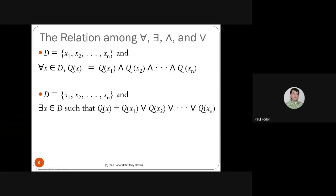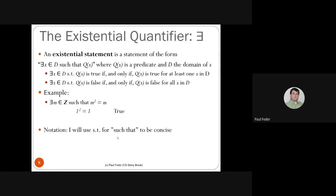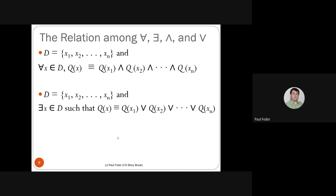Similarly, the existential quantifier over a finite domain is equivalent to a disjunction: there exists X in D such that Q(X) is equivalent to Q(x₁) ∨ Q(x₂) ∨ ... ∨ Q(xₙ). This is true if at least one element makes it true. This is exactly what we did when proving 'for all X in {1,2,3,4,5}, X²>X' by transforming it into a conjunction.